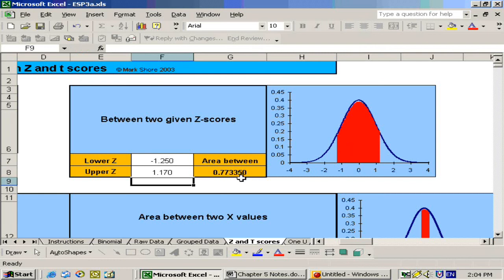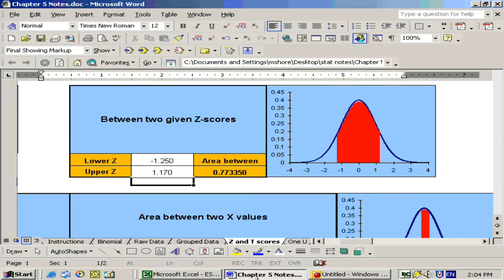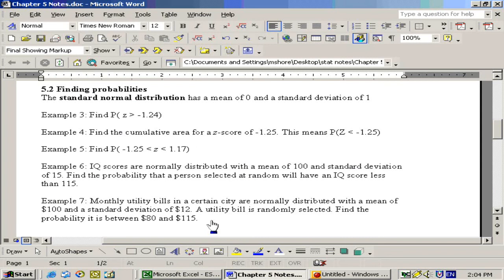So the area is 0.7733, or the probability is a 77.33% chance, assuming I typed in the numbers correctly. Negative 1.25 to 1.17, yes.